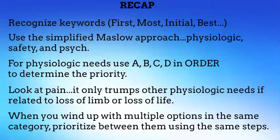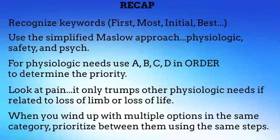When you're looking at the physiologic needs, to prioritize answer items use A, B, C, D in order — that is airway, breathing, circulation, and decreased mental status. When you come across a pain item, remember that it only trumps other physiologic needs if it is related to loss of limb or loss of life. When you wind up with multiple options in the same category, prioritize between them using the same steps.